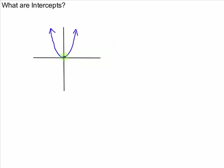In this last example, there is only one intercept that happens to be the origin. So this point (0,0) is the x-intercept because it touches the x-axis and it's also a y-intercept because it touches the y-axis. So lots of possibilities here.